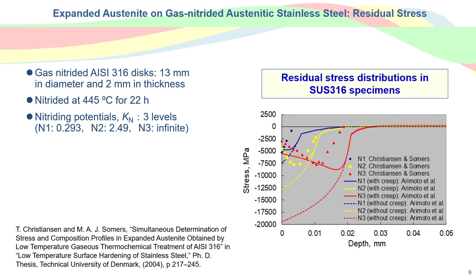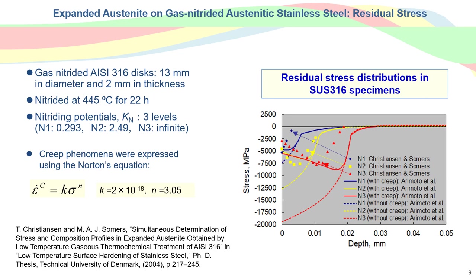The in-depth residual stress in disk specimens of austenitic stainless steel after gas nitriding at the same condition as the previous problem. These measurements are indicated by the markers in the figure. Our simulation expressed creep phenomena using Norton's equation. In the simulated result stress curve, the presence or absence of consideration of the creep phenomena is distinguished by the with-creep and without-creep regions. The with-creep formula gives a prediction close to the experimental value.